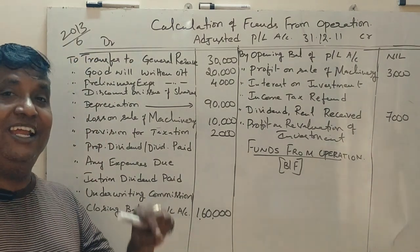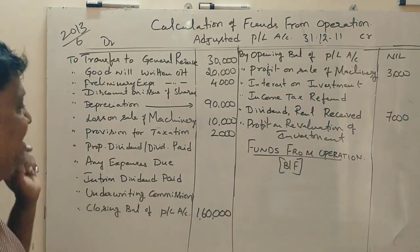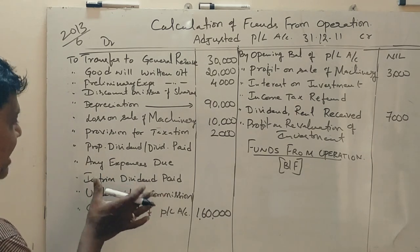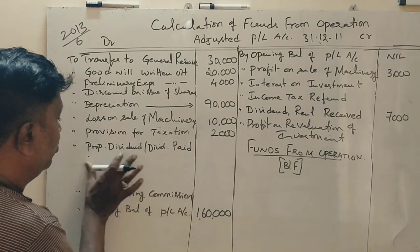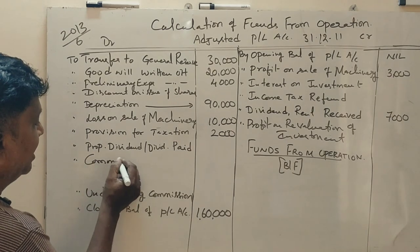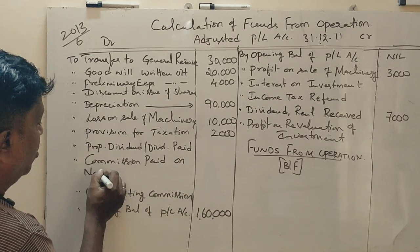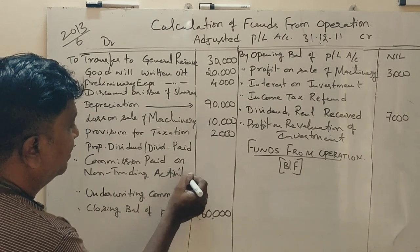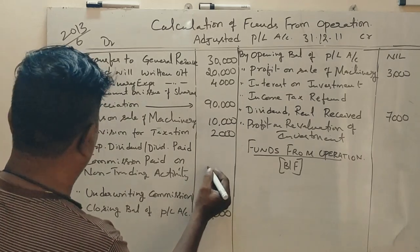Professional commission is a non-trading purpose payment. Commission paid on non-trading activity — non-trading activity versus business trading activity. So 10,000 rupees are noted.